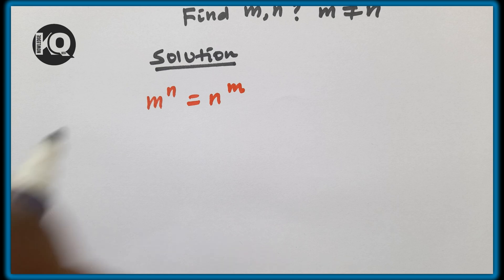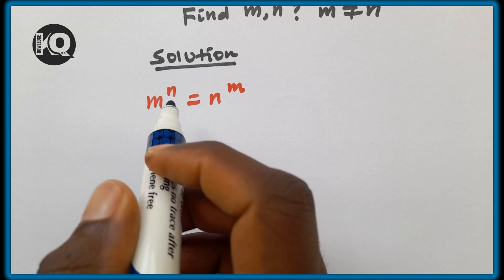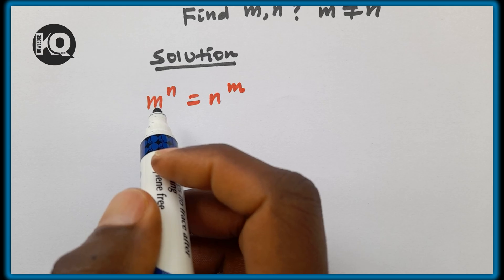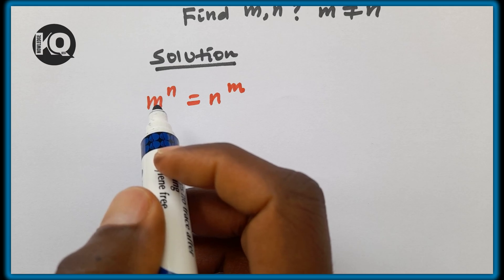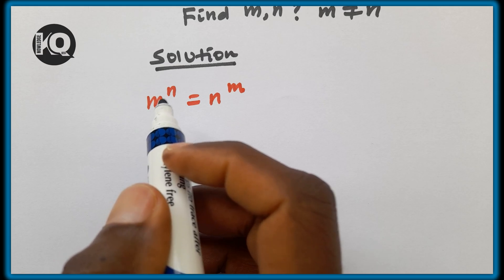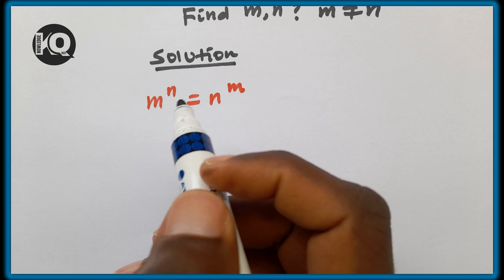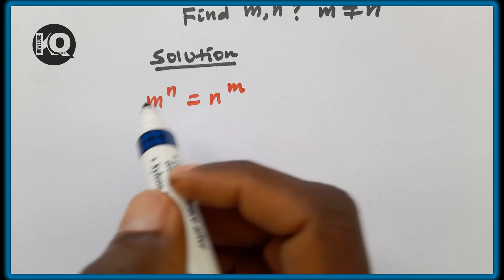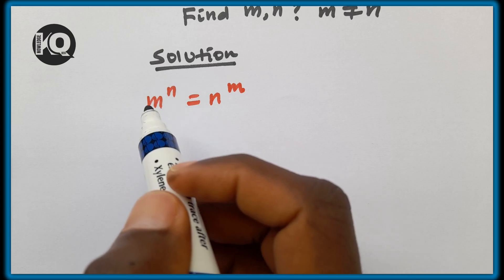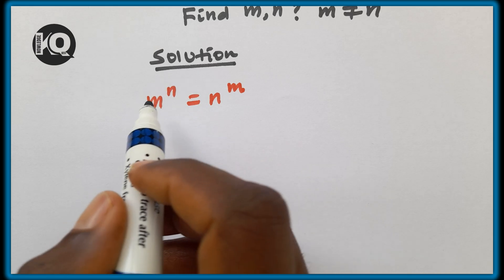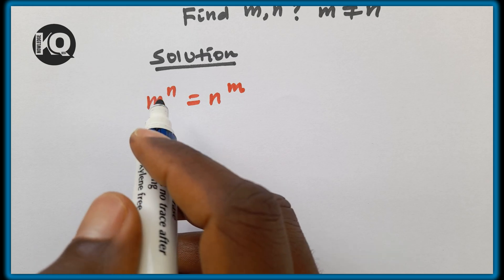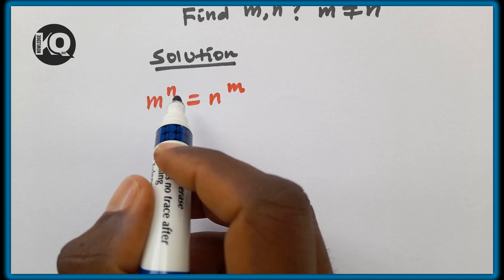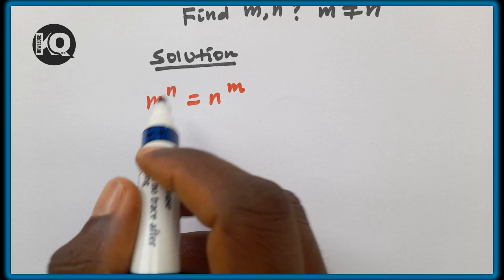Since m and n are different numbers — if m equals n all pairs would be solutions — we need to express m in terms of n, or vice versa.